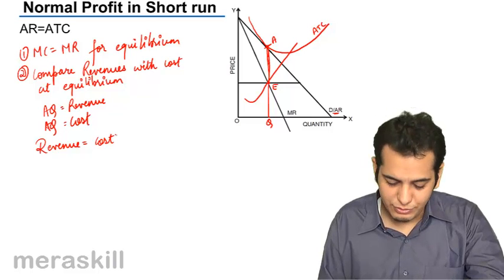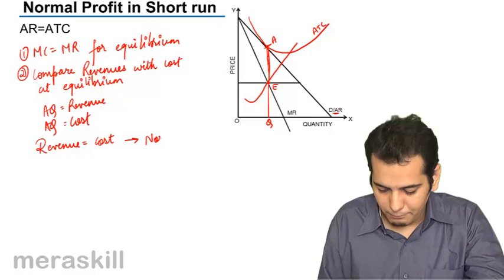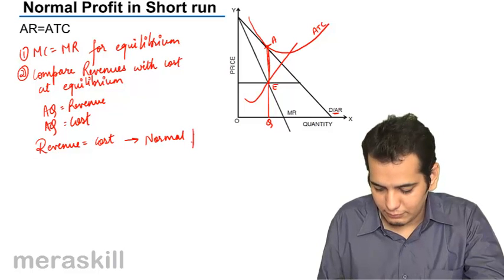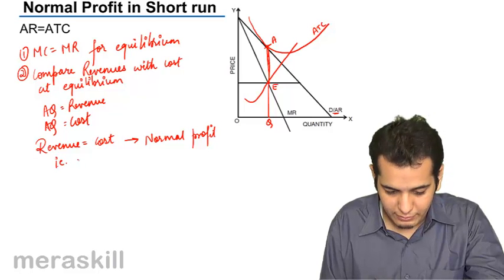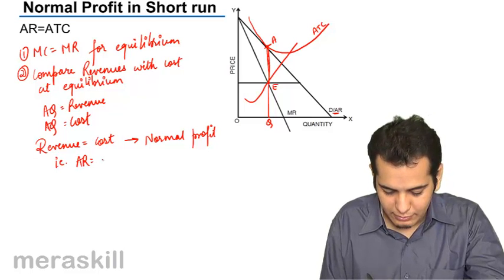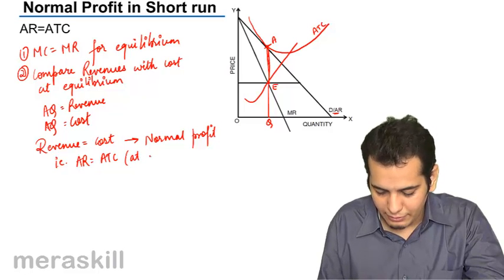That means my revenue equals my cost. Thus, I'll have a situation of normal profit. That is where AR equals to ATC at equilibrium. I'll have a situation of normal profit.